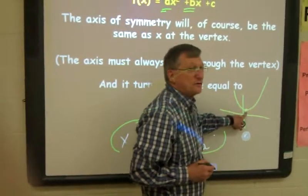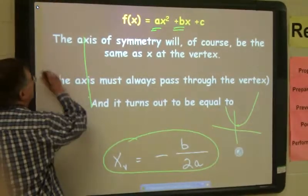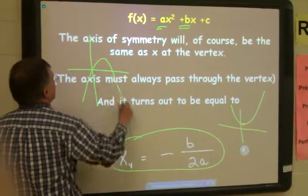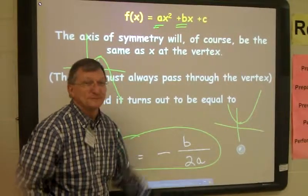If I want to find this point right here, I'm going to use second calc minimum. And if I want to find this point right here, I use second calc maximum. And that will give you x at the vertex every time.